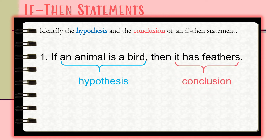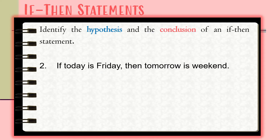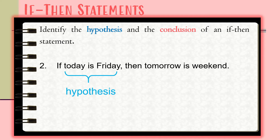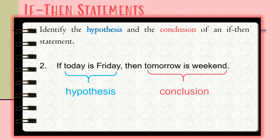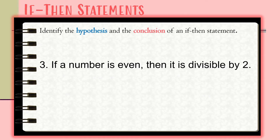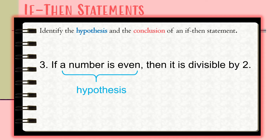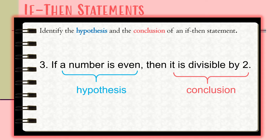For number two, we have the statement: 'If today is Friday, then tomorrow is weekend.' The hypothesis is 'today is Friday' and the conclusion is 'tomorrow is weekend.' Next, we have the statement: 'If a number is even, then it is divisible by two.' The hypothesis is 'a number is even' and the conclusion is 'it is divisible by two.'